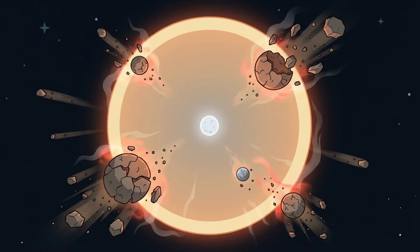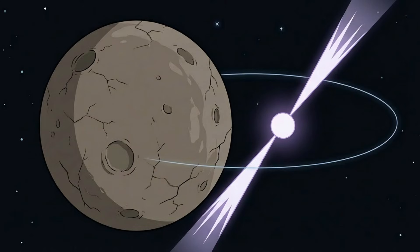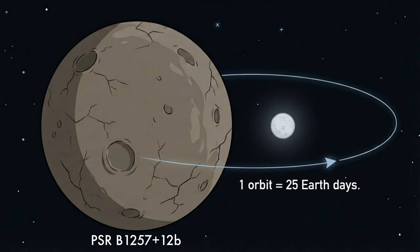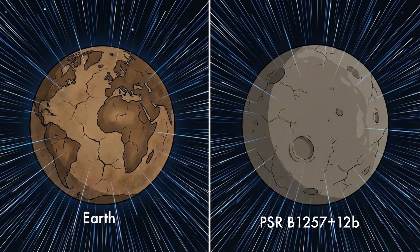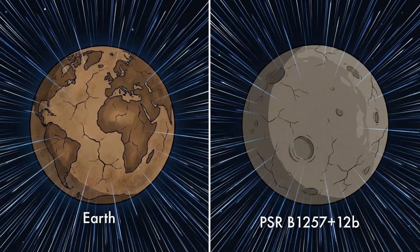Any nearby planet should have been destroyed when the star exploded, yet this one remains. PSR B1257-12b completes an orbit in about 25 Earth days, existing in an environment flooded with radiation far beyond anything Earth experiences. For comparison, a similar level of exposure in our solar system would sterilize planets instantly.